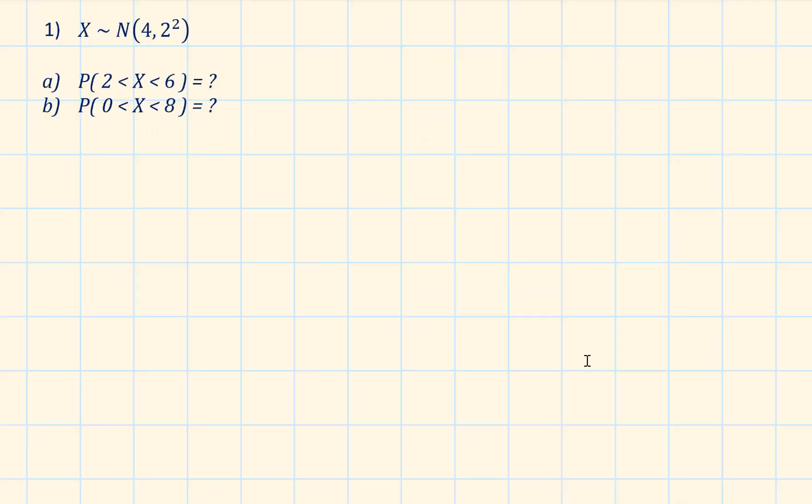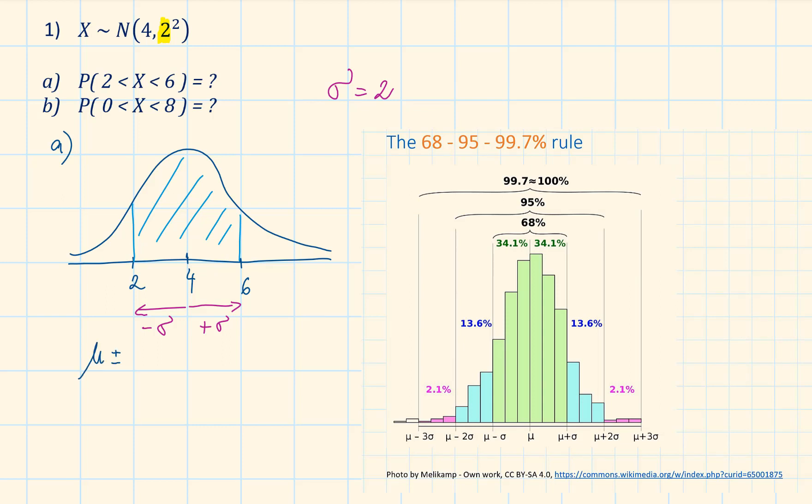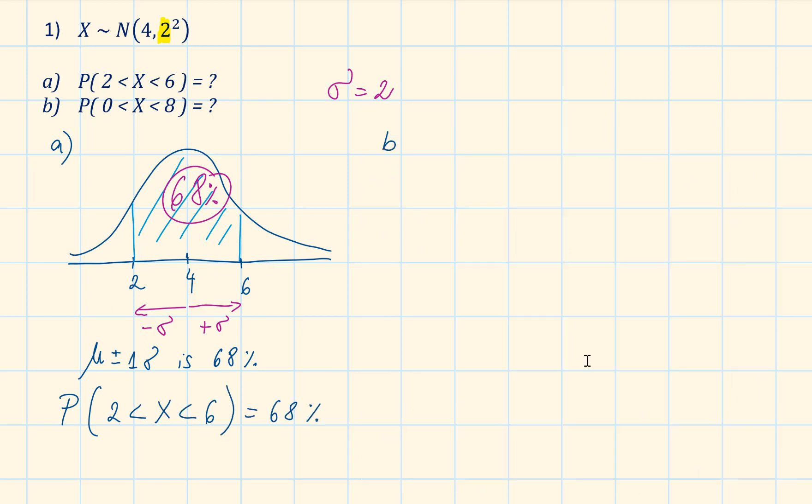If x is normally distributed with a mean of 4 and a variance 2 squared, what is the probability that x is between 2 and 6? The standard deviation is 2. 4 minus 1 standard deviation is equal to 2, and 4 plus 1 standard deviation is equal to 6. We can see that this represents a range of mean plus minus 1 standard deviation. This is 68%, so the probability is 68%.